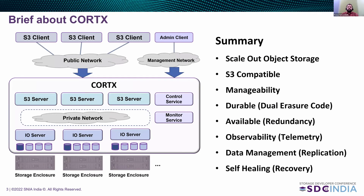Let's dive into a brief about the Cortex system. Cortex is an open source, scalable, scale-out object storage system which can be customized to the required solution as per the needs of scale and the underlying storage solution. This system is S3 compatible, manageable, and durable using dual erasure coding support. It is also highly available as it supports redundancy of metadata. Cortex has other important characteristics such as observability using telemetry data, data management and replication, and self-healing. In the case of crash or failure, the system switches to degraded mode but continues to operate, and after replacing the node or disk, it comes back to normal and functions at full capacity.